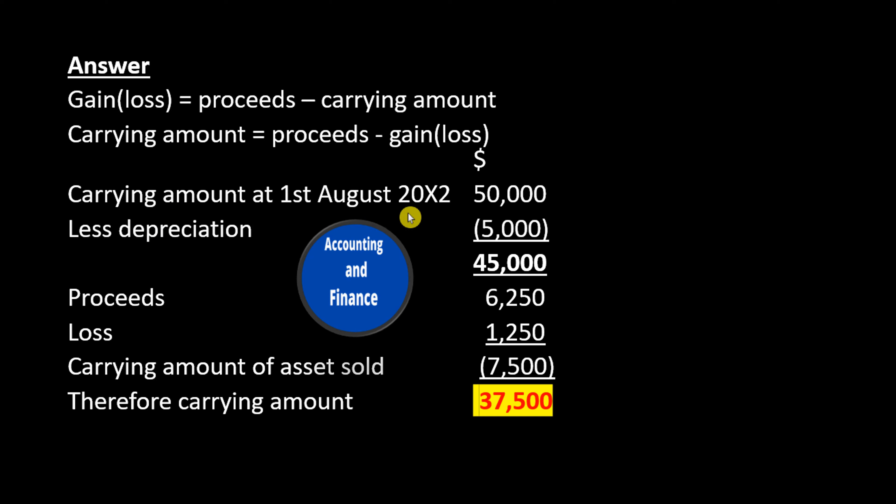August 20X2: $50,000. Less depreciation: minus $5,000, total $45,000. Proceeds: $6,250. Loss: $1,250. Carrying amount of assets sold: minus $7,500. Therefore, carrying amount: $37,500.